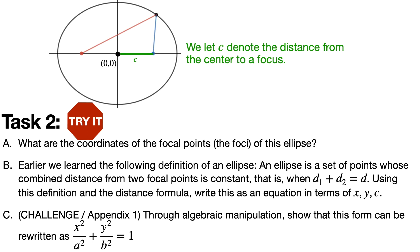We let c denote the distance from the center to a focus. So now we have an alphabet soup: a, b, c, and d. Our tasks are: (a) find the coordinates of the focal points of this ellipse; (b) using the focal point definition, the distance formula, and the points discovered, write the equation in terms of x, y, and c — you'll probably also have d in there.